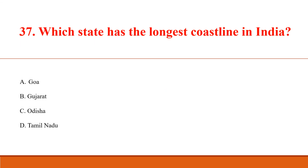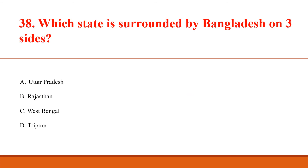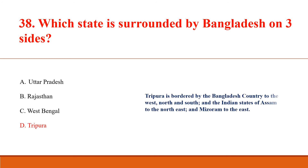Which state has the longest coastline in India? Answer B: Gujarat, about 1,600 km long. Which state is surrounded by Bangladesh on three sides? Answer D: Tripura. Tripura is bordered by Bangladesh to the west, north, and south, and the Indian state of Assam to the northeast and Mizoram to the east.